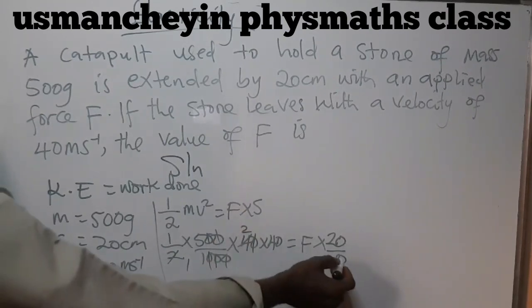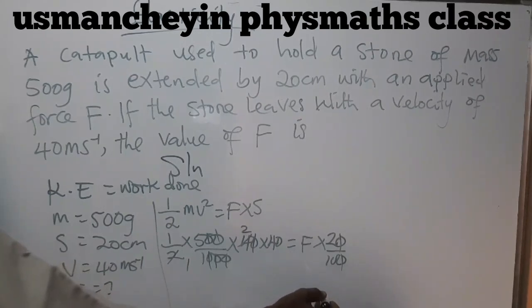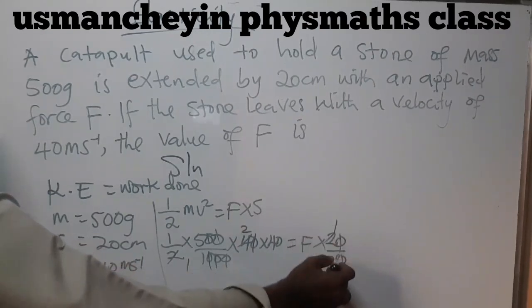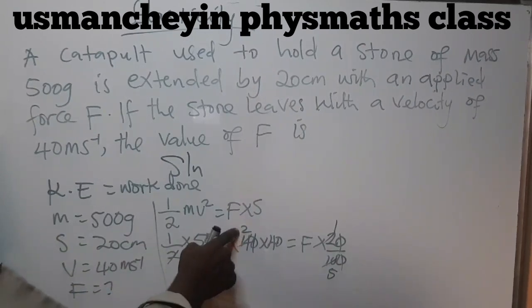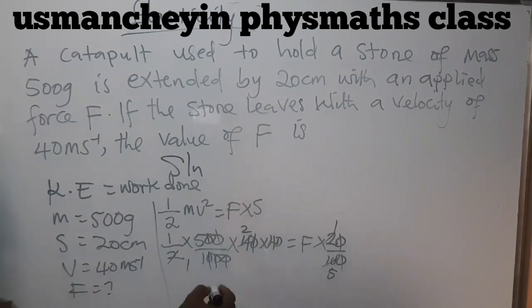Zero will also cancel zero. Then two here is one, two here is five. So from here, one times two, one times five is five, five times two is ten, ten times forty is 400.